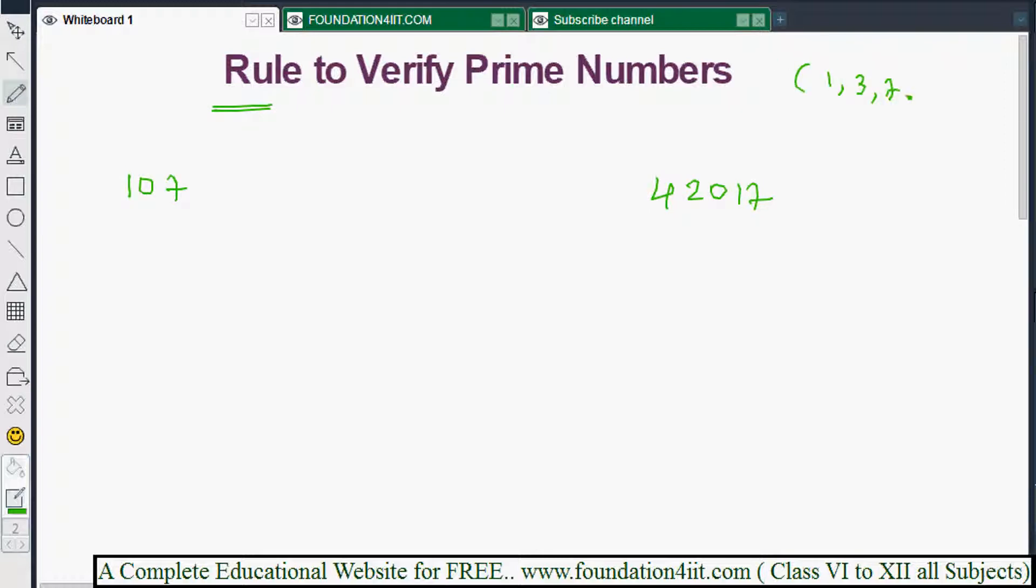Prime numbers always end with only 1, 3, 7, or 9. Any number apart from this is not prime, we can say directly. But even though a number is ending with 1, 3, 7, or 9, how to find out? The first method is to divide the given number by 6.